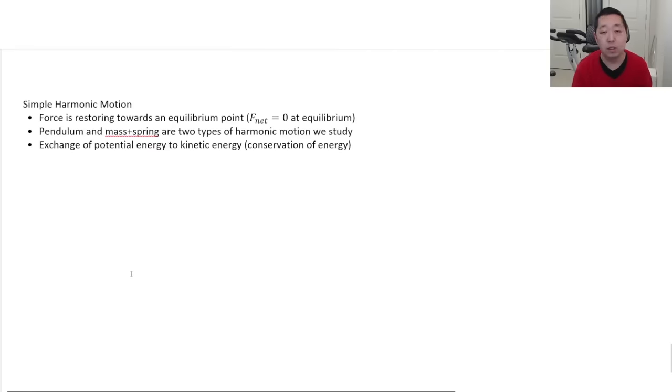And last, simple harmonic motion. There's a force restoring towards equilibrium point. That's what characterizes simple harmonic motion. What that results in is that the motion is periodic and sinusoidal. So it has a sine and cosine form for them. The pendulum and the mass spring are two types of harmonic motion we study. And there's always an exchange of potential energy to kinetic energy. In the case of a pendulum, it's gravitational potential energy converting to kinetic energy back to gravitational potential energy. For a mass on a spring, it's spring potential energy and kinetic energy if it's a horizontal mass on a spring. And if it's a vertical mass on a spring, which is the most complicated kind, you have three forms of energy: gravitational potential, kinetic, and spring potential energy. But again, equilibrium is when the net force is zero in there.